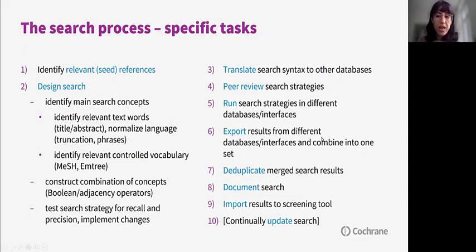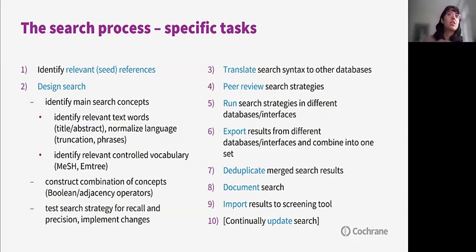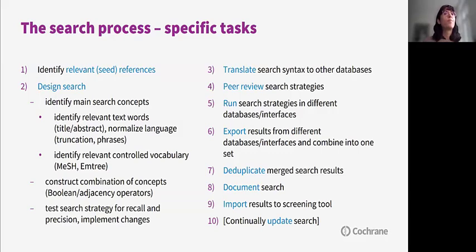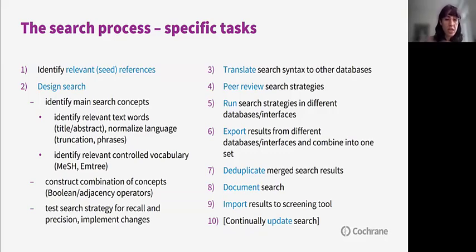The search process can be broken down into specific tasks. First, it consists of identifying relevant seed references, either by communicating with the people you are running the search for or by searching yourself. Then you design the search by identifying main search concepts — relevant text words from the title and abstract, normalizing language, truncation and phrases — and identifying relevant controlled vocabulary such as MeSH terms or entry terms. You then construct the combination of concepts using Boolean or adjacency operators and test the search strategy for recall and precision.